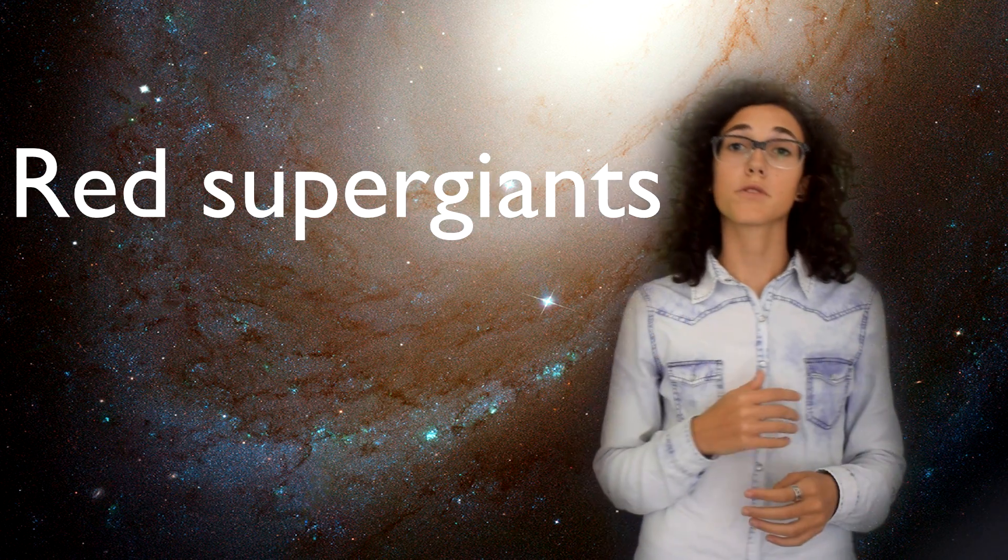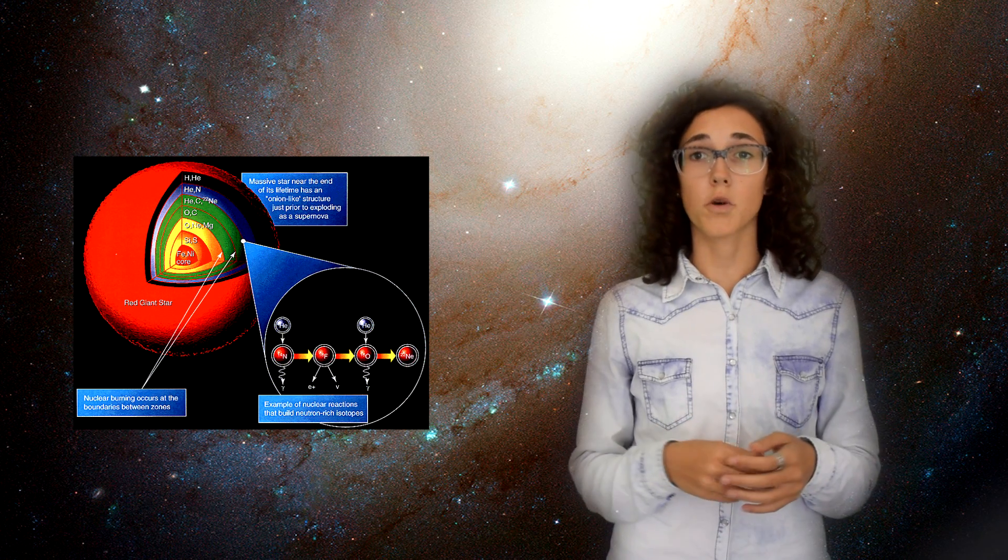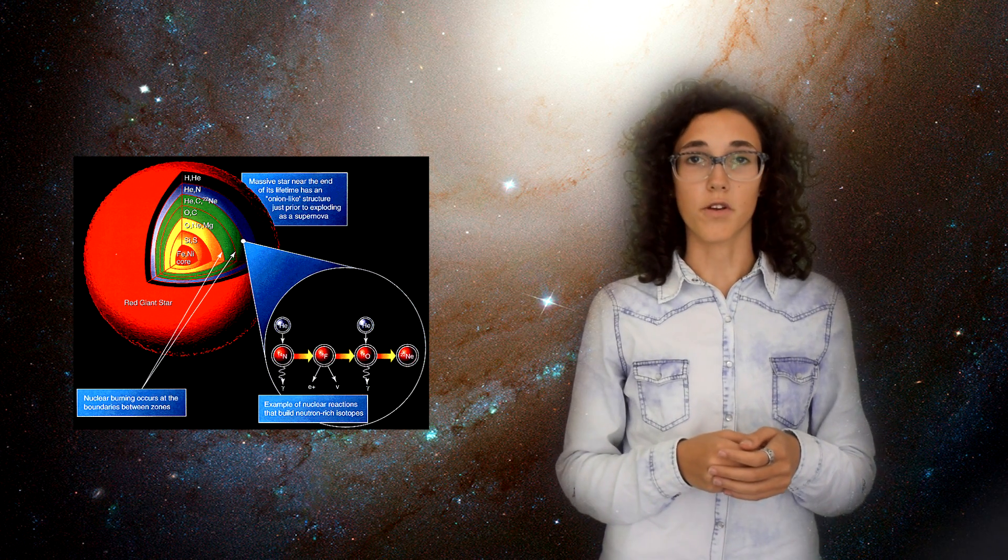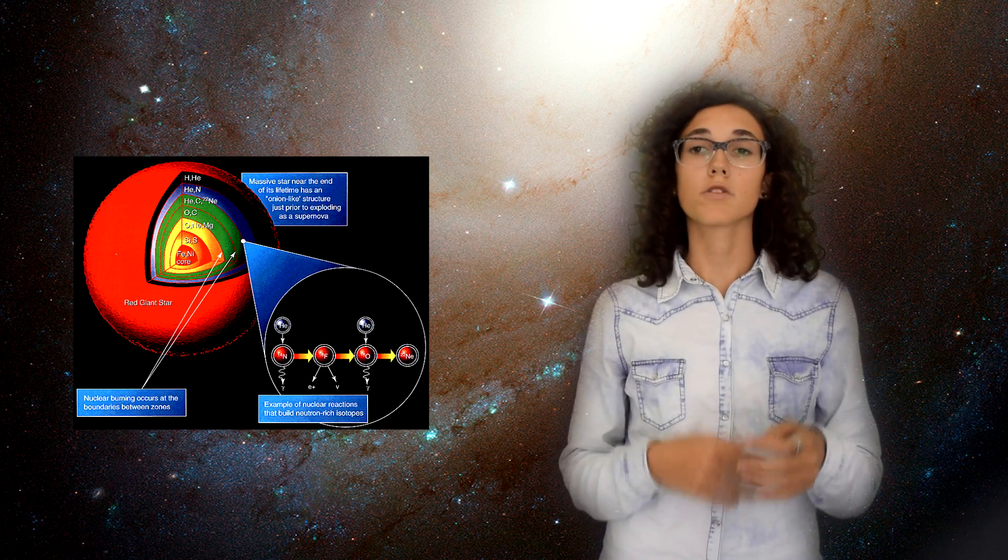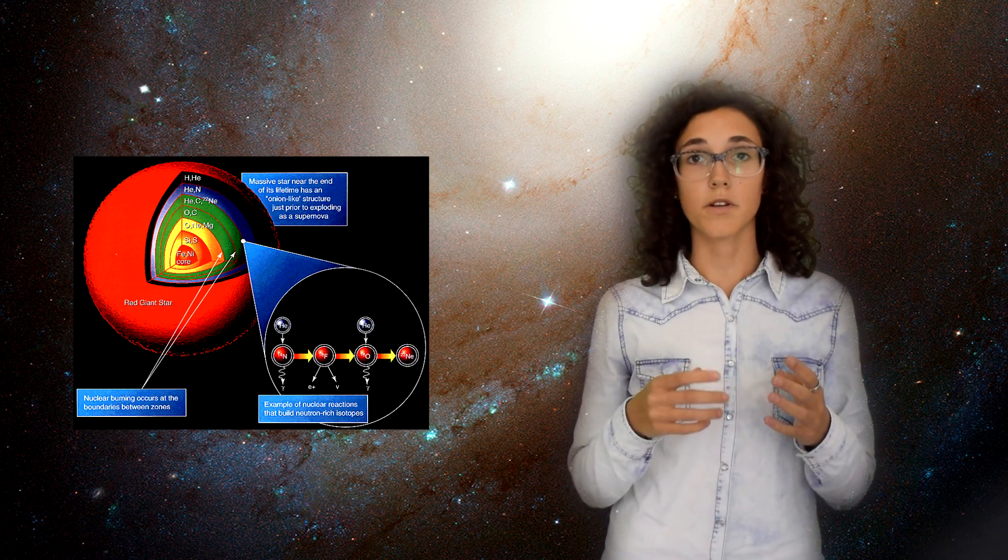Once the process of hydrogen fusion into helium is over, stars with masses over 10 solar masses start the conversion of helium into carbon. Big stars expand and reach the phase of red supergiant, and proceed then with the synthesis of other heavier elements. The core looks layered; such a structure is compared to the concentric layers of an onion. In each shell, the fusion of different elements occurs. The closer one gets to the core, the higher the temperature and pressure.